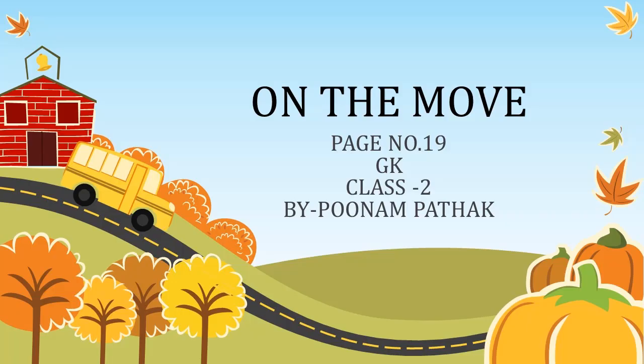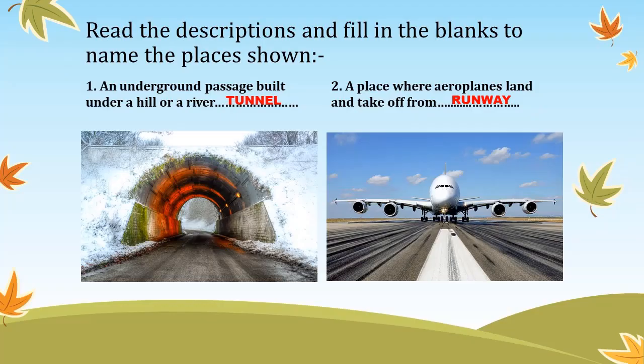Hello dear children, in this video we are going to do page number 19 of the GK book, and the title of this page is 'On the Move.' The question is: read the descriptions and fill in the blanks to name the places shown. In this page you can see so many pictures — you have to find out the names of the pictures and write down the name in the given blank. Are you ready for it?